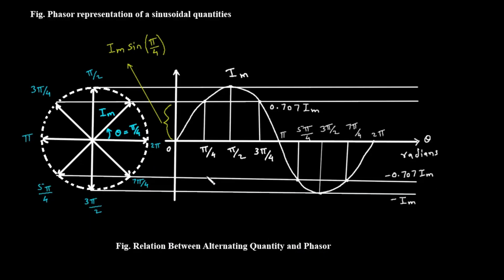On the left side of the diagram, you see a circle with a rotating arrow inside — this is our phasor. Let's assume it represents a current, so its length is I sub m, which stands for the maximum current. As this arrow rotates counterclockwise, its tip traces out the circle. We can see various angles marked on the circle: 0, pi over 4, pi over 2, 3 pi over 4, pi, and so on. These are angles in radians.